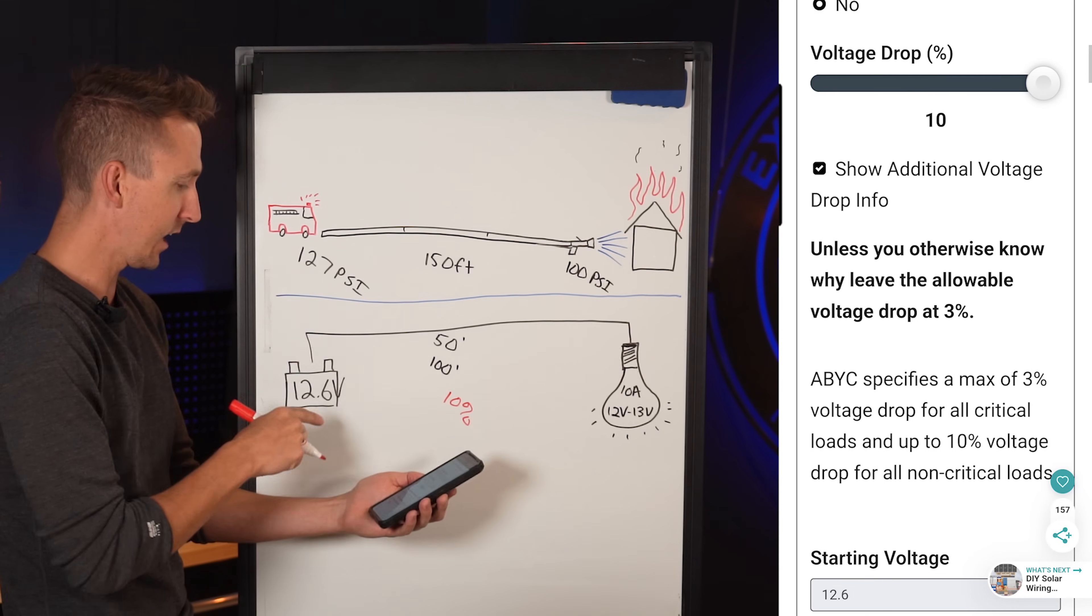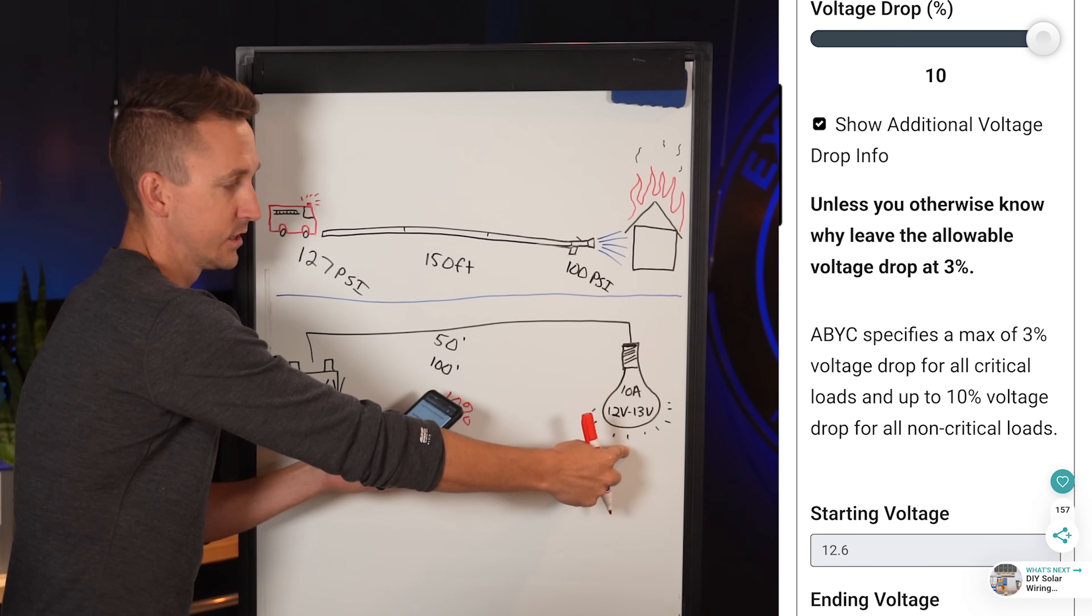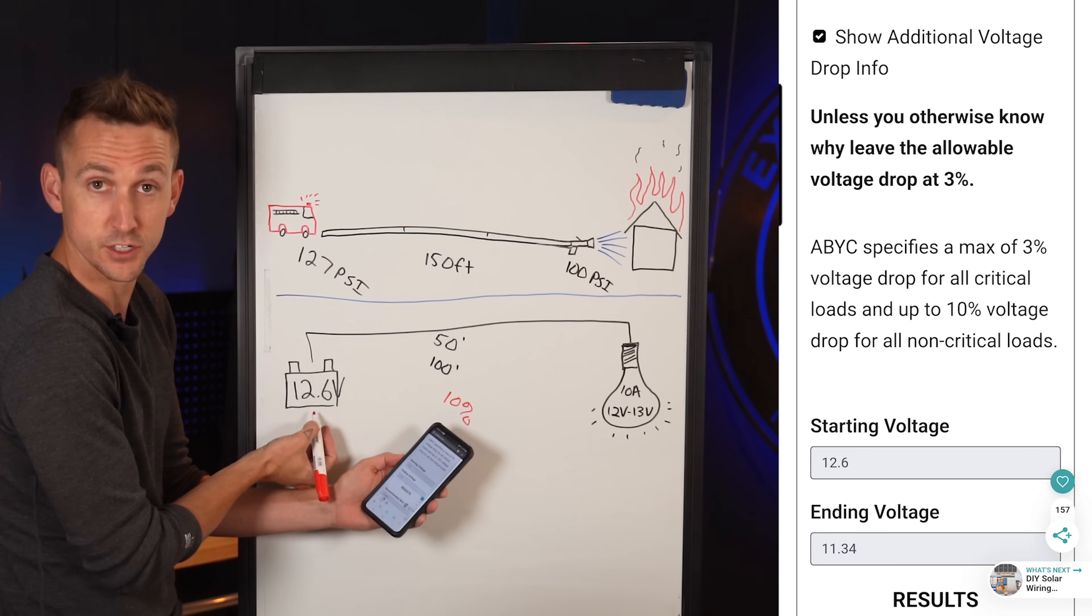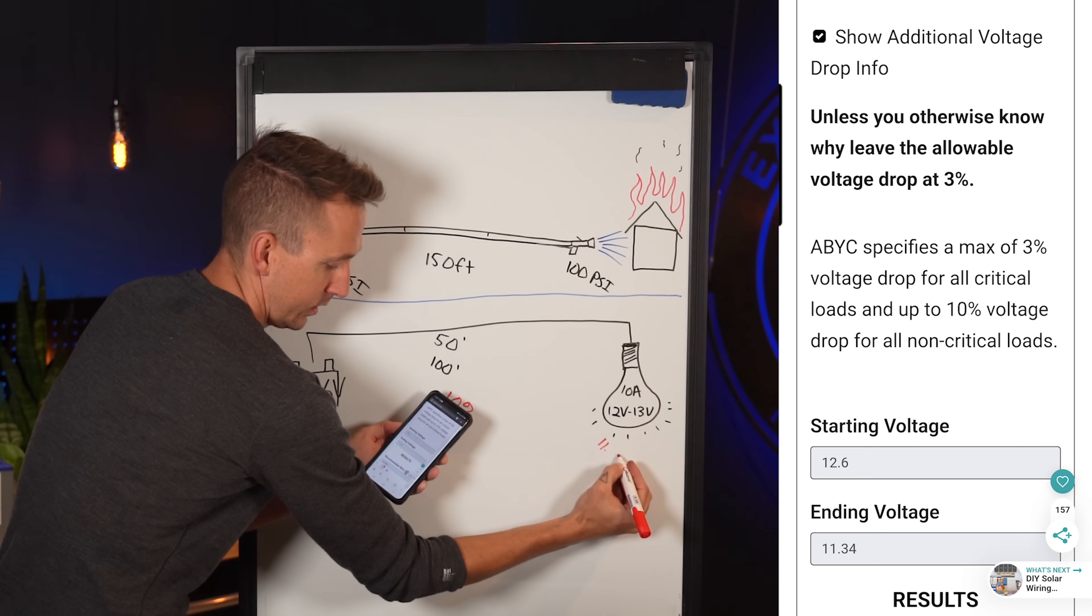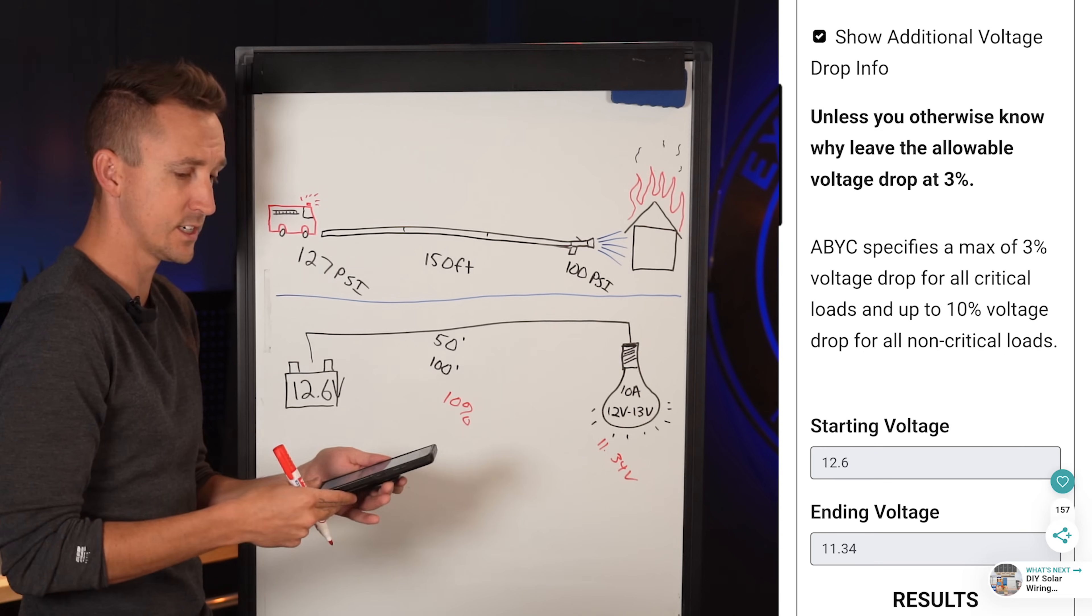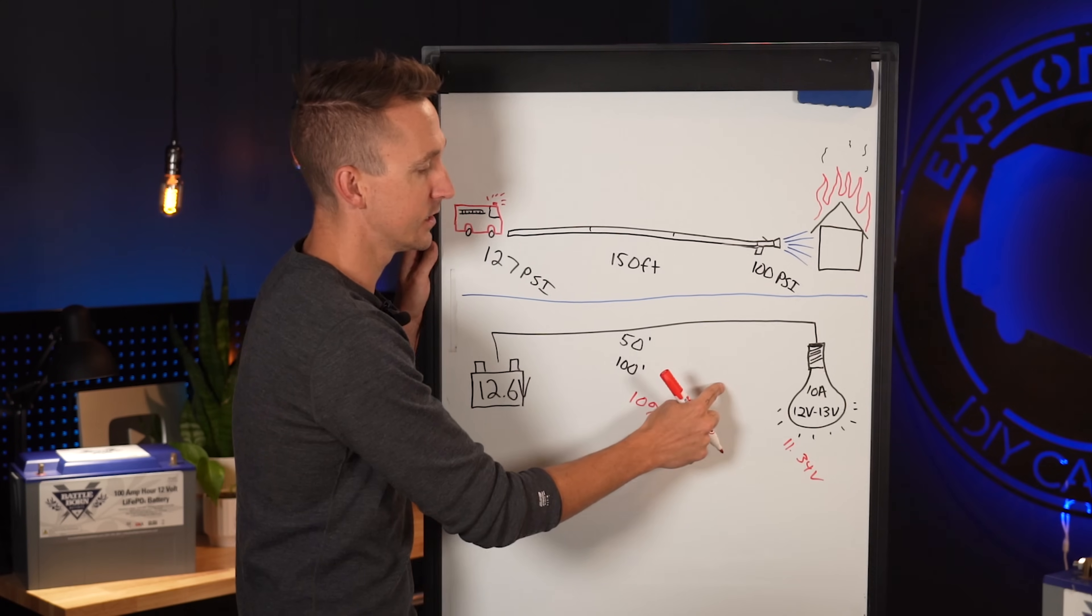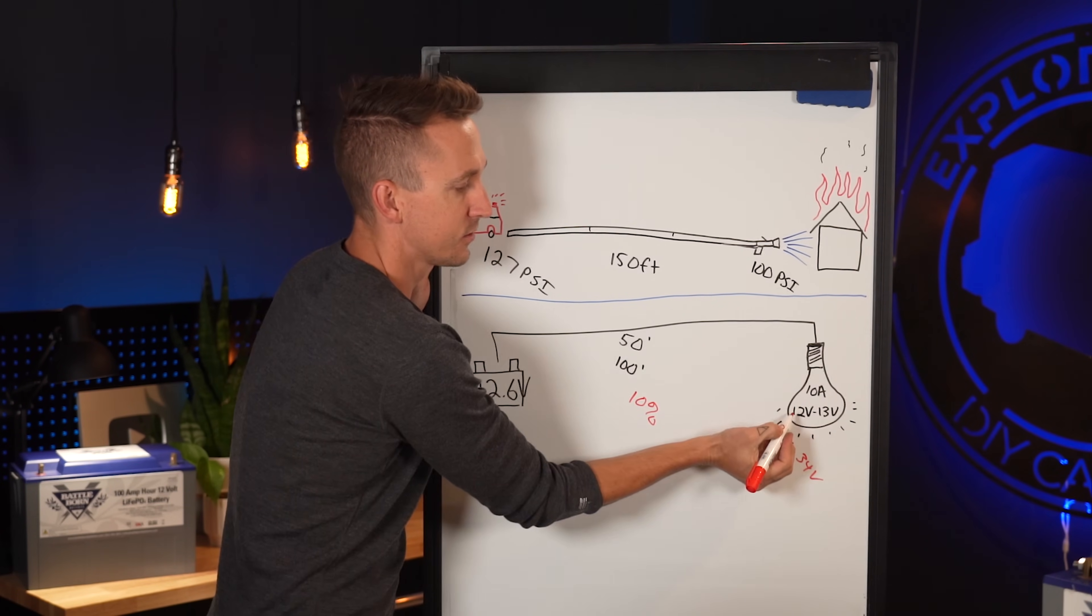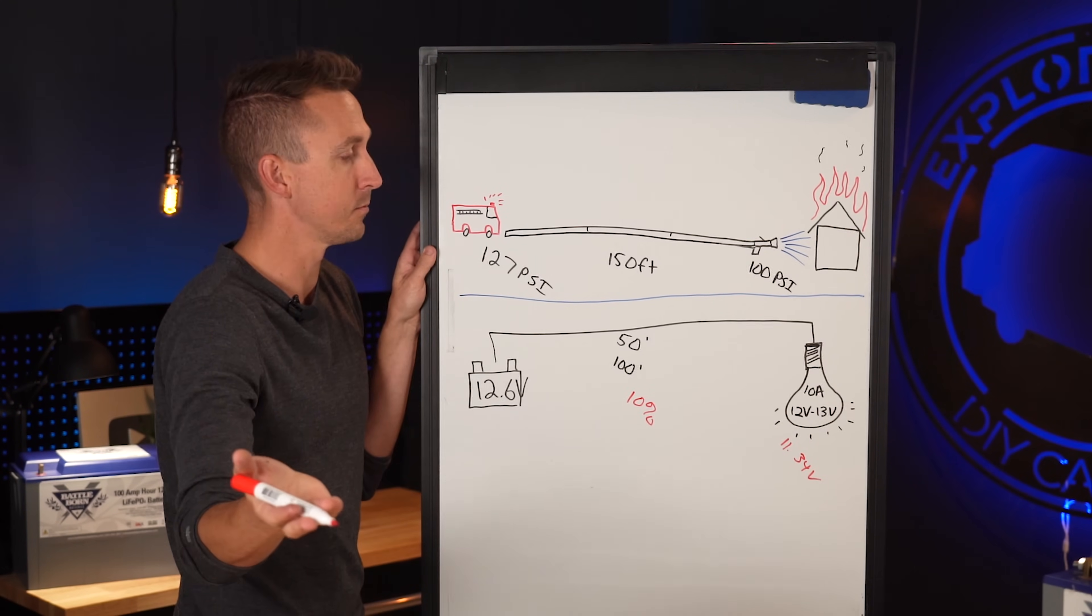And then that means that 12.6 volts needs to be able to deliver the 12 volts to this end. But with 10% voltage drop, that means that the starting voltage is 12.6 volts and the ending voltage would be 11.34 volts. So 10% voltage drop on here, although it's technically within code of 10% voltage drop for a non-critical circuit, it's not going to turn that light bulb on because the voltage, by the time the voltage drop happens, is only delivering 11.34 volts to a light bulb that needs 12 volts minimum for it to function.